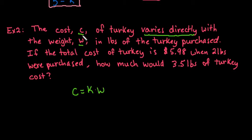So the cost of turkey varies directly with the weight in pounds of the turkey purchased. So our constant of variation is going to be the cost per pound. So we would just plug in the values that we know. It says if the total cost of turkey is 5.98 when 2 lbs were purchased. So we would plug in 5.98 equals k times 2. And then it asks us how much would 3.5 lbs of turkey cost.